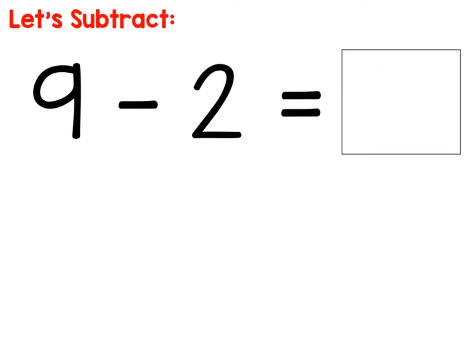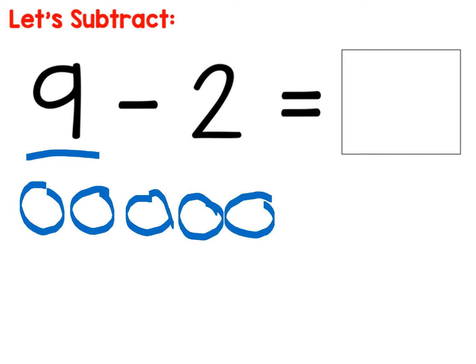Nine minus two. So I have nine to start with, so I have to draw nine circles. One, two, three, four, five, six, seven, eight, nine.